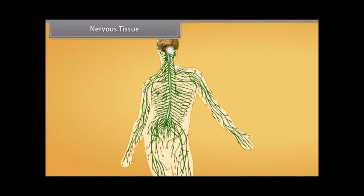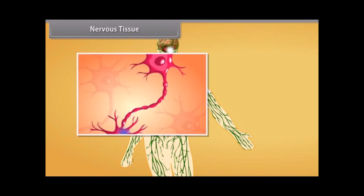A tissue which is specialized to transmit messages in our body is nervous tissue. Nervous tissues contain specialized unit cells called nerve cells or neurons, which have the ability to receive stimuli from within or outside the body and conduct that impulse to different parts of the body. This impulse travels from one neuron to another neuron.